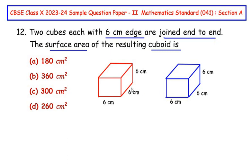You can see here that I have drawn two cubes. The length is 6, width is 6 and height is 6. Similarly, the second cube is also of the same dimensions: length is 6, width is 6 and height is 6.